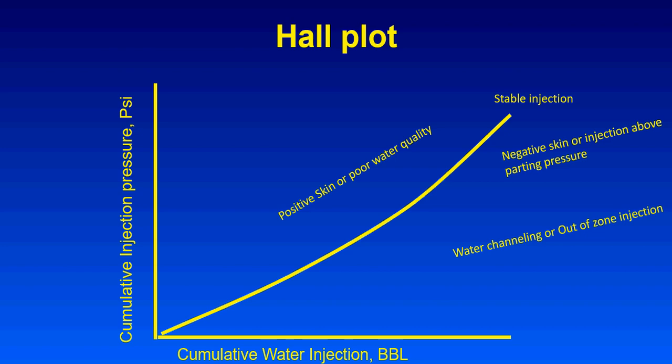From the curves you can see: one curve indicates very stable injection; another indicates water channeling — meaning you are injecting out of zone, perhaps through cement channeling behind casing. You can also identify a partial reduction of the slope, which indicates negative skin or injecting above the parting or fracturing pressure, meaning you have already fractured the formation.